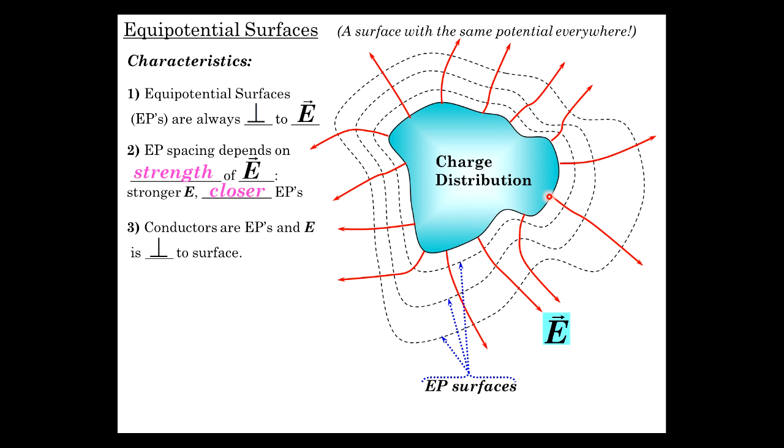And E is perpendicular to the surface everywhere, which must be true because if there was any component that was not perpendicular, it would move charges around due to a net force on the charges, and they'd move until it met that condition. No work can be done by the electric field on a charge in moving it over the surface. The force is from the E-field, and the force is always perpendicular to the equipotential surface. So if you move a charge along the surface, there will be no force in the direction of its motion, therefore no work.